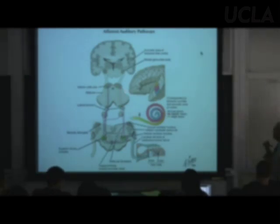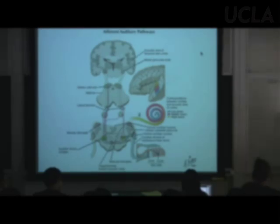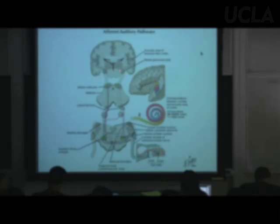Cell bodies of the inferior colliculus send their axons up to the thalamus — more specifically the medial geniculate body or nucleus. If it's in the thalamus, that's the diencephalon.